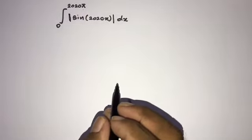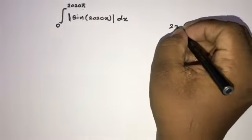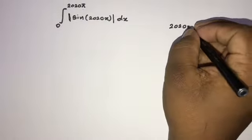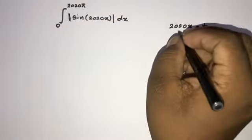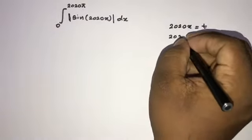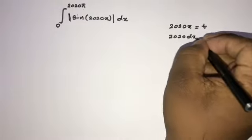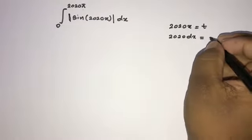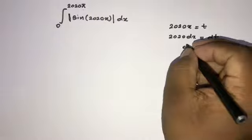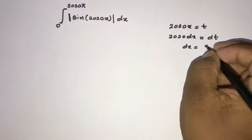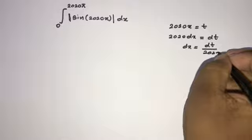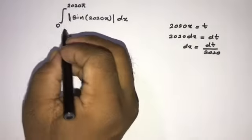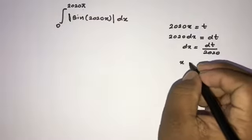We can use the substitution method. If we take 2020 times x equal to t, then differentiating, we get 2020 dx equals dt, so dx equals dt over 2020.